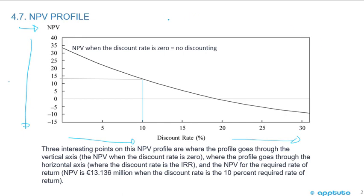Remember, this is for conventional cash flows where there's an initial negative cash outflow followed by subsequent positive inflows. We saw in a previous LOS a question with non-conventional cash flows where there was a big negative cash flow in year two, and it was the higher discount rate that gave us the positive net present value. So keep in mind this is conventional cash flows.